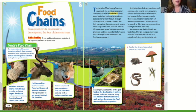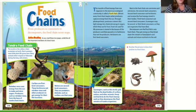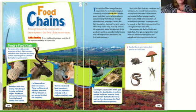If there's no food, wolves will die, and obviously plants and other animals die too. Scavengers, such as this arctic gull, feed on the dead bodies of caribou, wolves, and other animals. Fungi and bacteria do the final cleanup work as they decompose the final remains of tundra organisms. Those decomposers break down all the dead stuff and add nutrients to the soil so that more producers can grow — and those herbivores eat them, then carnivores eat those herbivores. The cycle just keeps going.